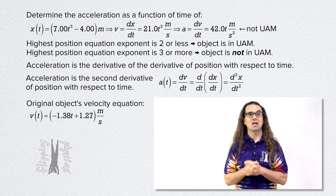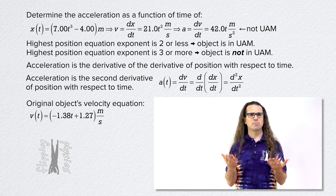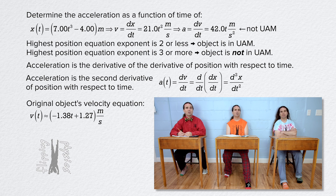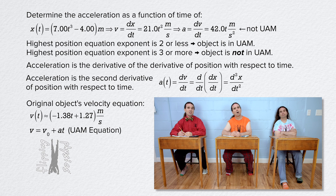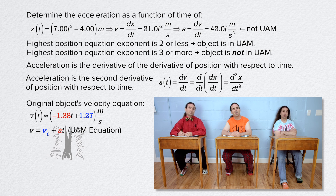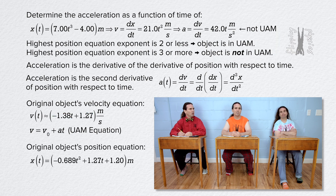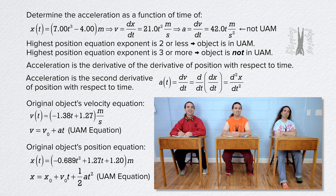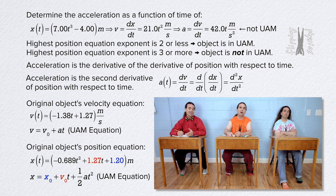Let's look at the velocity equation we derived. It is one of the uniformly accelerated motion equations: velocity equals velocity naught plus acceleration times time. So the initial velocity equals 1.27 meters per second and the acceleration is negative 1.38 meters per second squared. The position equation is also one of the UAM equations: position equals position naught plus velocity naught times time plus one-half acceleration times time squared. It shows initial position equals 1.20 meters, initial velocity equals 1.27 meters per second, and one-half times acceleration equals negative 0.689, so acceleration equals negative 1.38 meters per second squared.